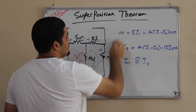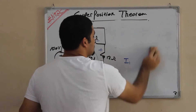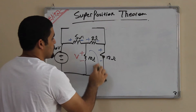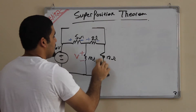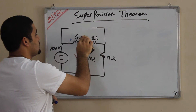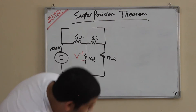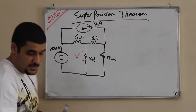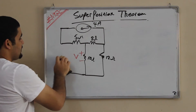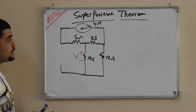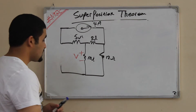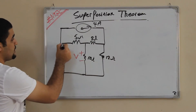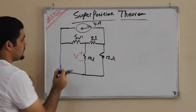Now we move to the second source. We remove the voltage source by placing a short circuit — putting a wire across the battery — so here is the short circuit.